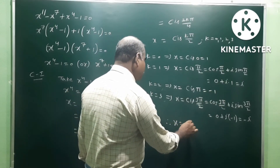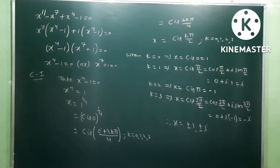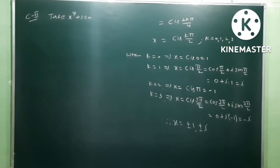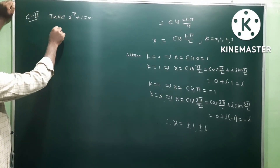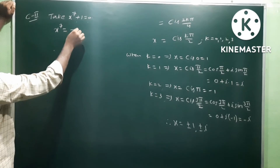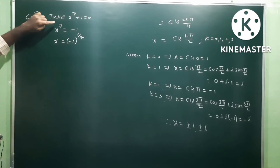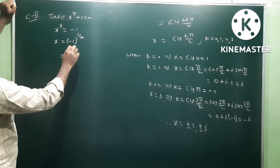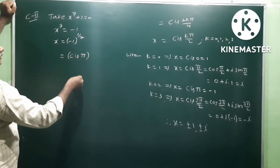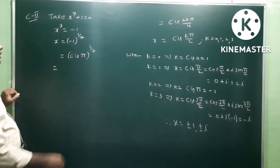So from Case 1, x is equal to plus or minus 1, plus or minus i — four roots. Case 2: take x power 7 plus 1 equal to 0. So x power 7 is equal to minus 1, meaning x is equal to minus 1 whole power 1 by 7. We can write minus 1 as cis π, so we have cis π whole power 1 by 7.